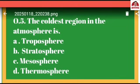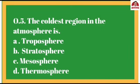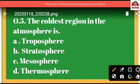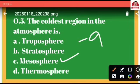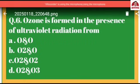Question number five: The coldest region in the atmosphere. As we know, our atmosphere consists of four layers: troposphere, stratosphere, mesosphere, and thermosphere. The coldest region is option C, mesosphere, where the temperature is about minus 92 degrees centigrade. So option C is correct.